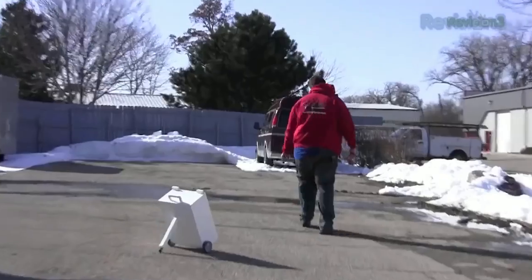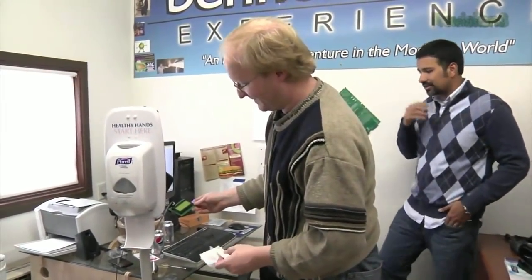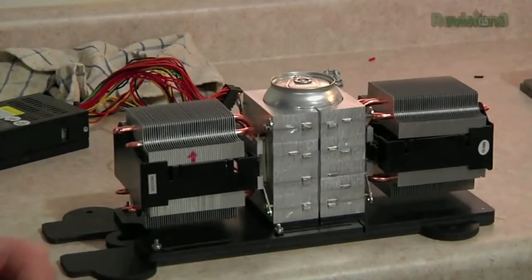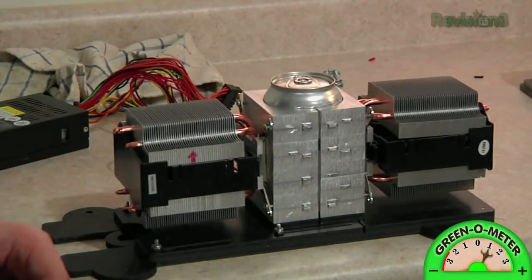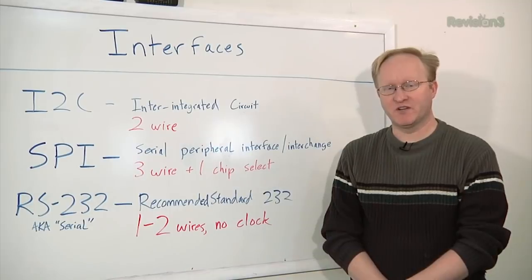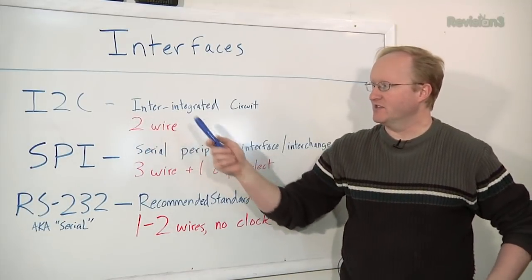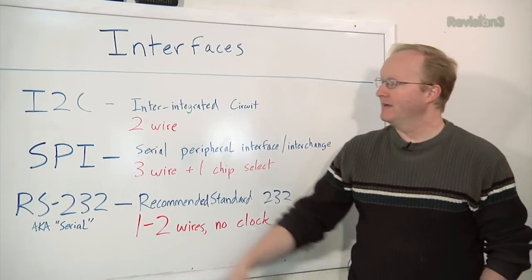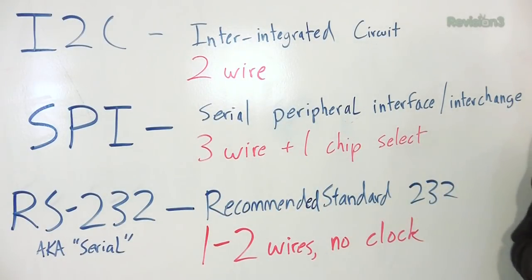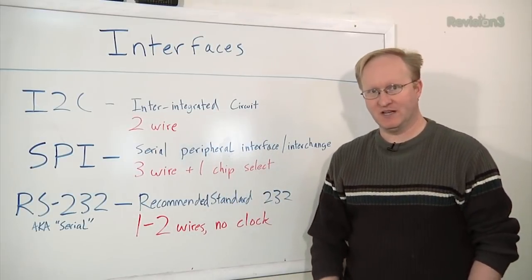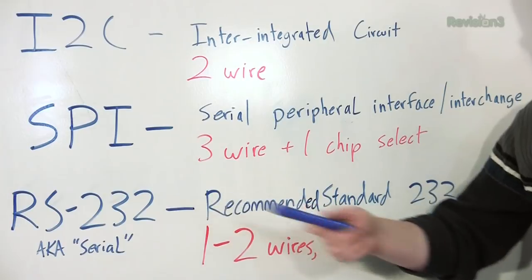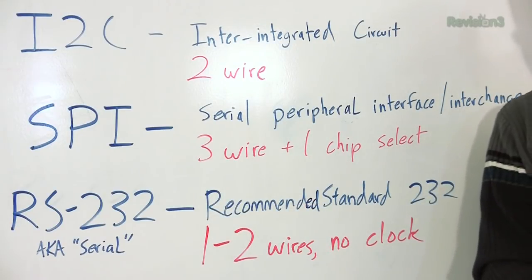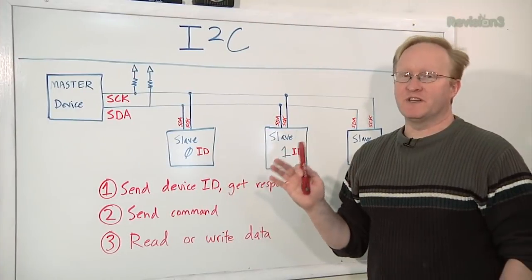Whether or not you realize it, you've seen us use these interfaces before on the show. The robot luggage, for instance, used RS-232. The hand sanitizer used SPI to communicate with the SD card to write data. And the can cooler used I2C to read the temperature of the can. What are these interfaces? We'll discuss that now. Here are the three very common interfaces we're going to go over in today's episode. I2C, which stands for Inter-Integrated Circuit. It has two wires, including clock and data. SPI, Serial Peripheral Interface, or sometimes interchange. It has three wires, plus one chip select wire. And the third one, the oldie but goodie, RS-232, recommended standard 232, one or two wires with no clock.